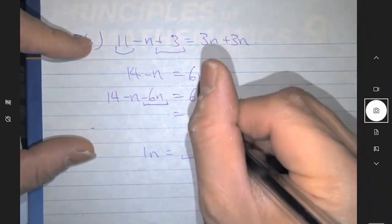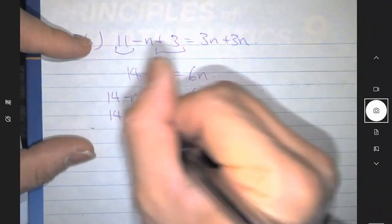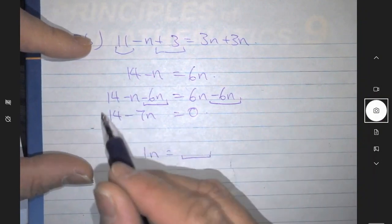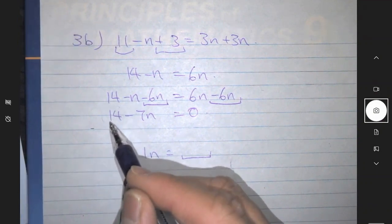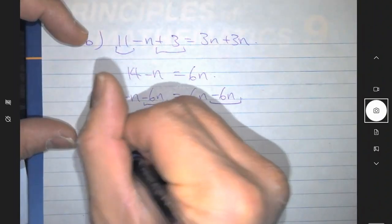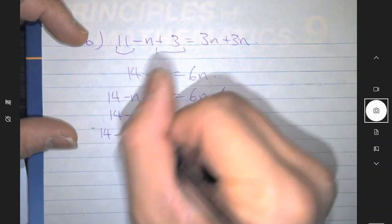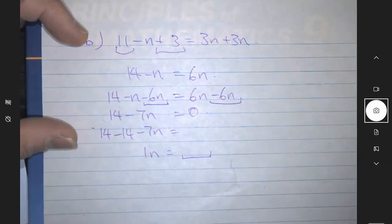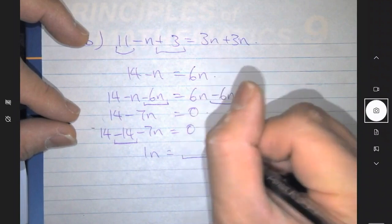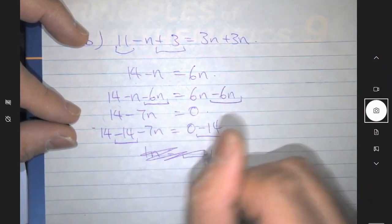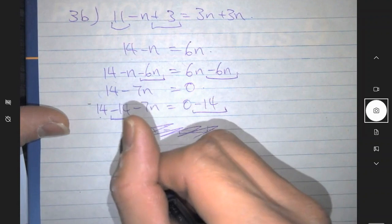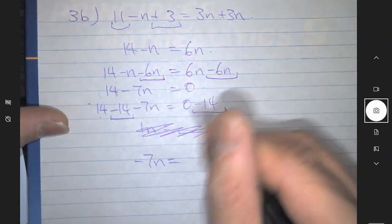This side becomes zero. On this side, 14 minus 7n equals zero. Now I want to move this plus 14 from the left-hand side to the right-hand side. To do that, I do opposite operation: opposite of positive 14 would be minus 14. So minus 7n, and since I'm subtracting 14 here, I also have to do minus 14 on the other side. 14 minus 14 is zero, so I have minus 7n equals minus 14.